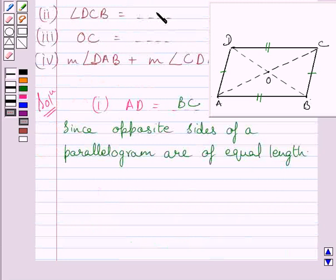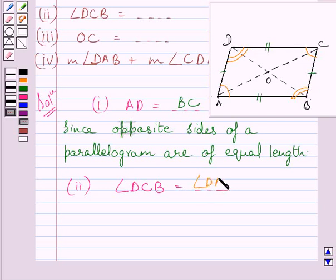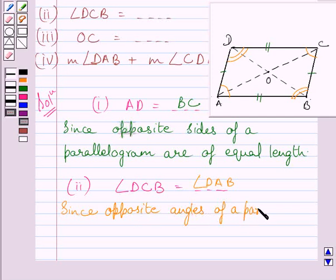Now consider the second part of the given question. We have to find angle DCB is equal to which angle. Let us mark angle DCB in the given figure. The opposite angle property of a parallelogram states that the measure of opposite angles of a parallelogram are equal. So, angle DCB is equal to angle DAB, since opposite angles of a parallelogram are of equal measure.